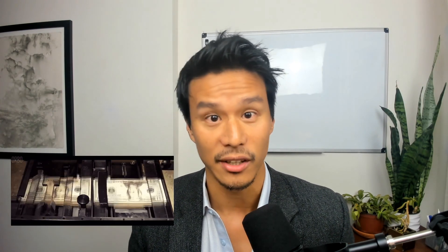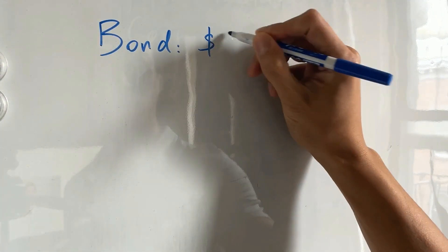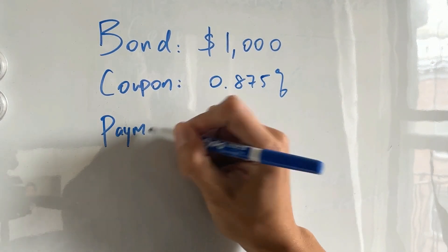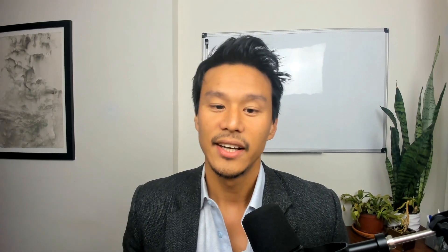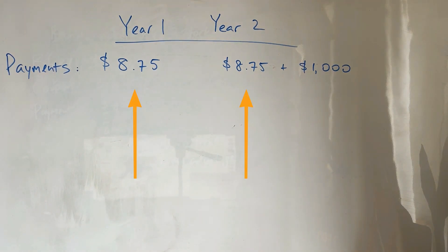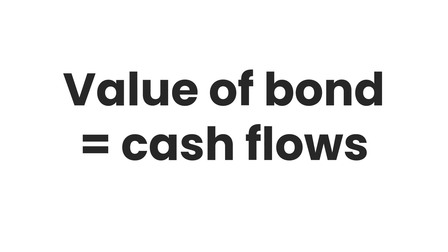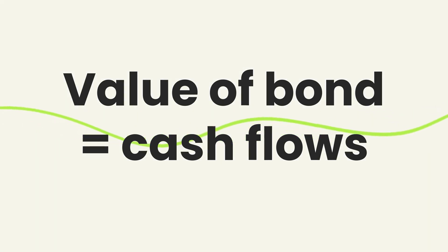Here's what this looks like in practice. The most simple cash-producing instrument is a bond. We purchase the bond — we give cash in exchange for the US government giving us interest payments over a period of time, and then returning the money in the future. Take a two-year note from the US government with a 0.875% coupon. That $1,000 bond will pay $8.75 each year. The future cash we're going to get by owning this bond is $8.75 each year for two years, and then $1,000 returned at the end of the second year. The value of that bond is all the cash that we're getting.